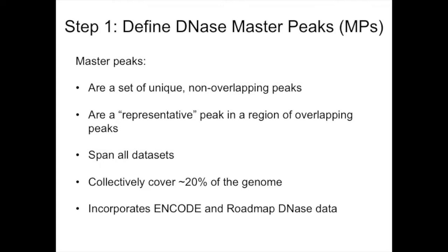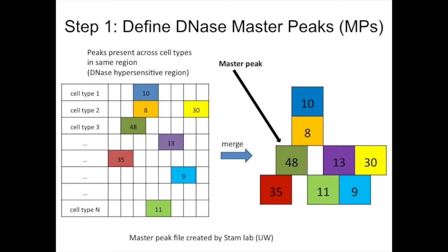We incorporate both ENCODE and Roadmap data together to generate these master peaks, and this is done by John Stam's lab. Visually, you have different cell types and tissue types from Roadmap with all their called DNase peaks. You merge them so they're all on top of each other along the linear genome, and we pick out a representative peak for each entire cluster — in this case the peak with the highest signal, labeled 48 — giving us a representative peak for all DNase clusters of peaks across cell and tissue types.